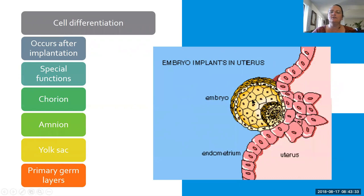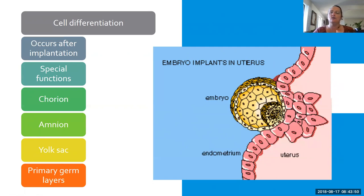Cell differentiation is when the cells start to go where they're programmed to go, very quickly after they start to divide. In the fetus they will all have special functions. Some of them are going to become the chorion and amnion, which make up the amniotic sac, and then there are going to be the primary germ layers. This egg — sorry, it's not an egg anymore, it's an embryo — is getting ready to burrow down into the cells of the uterus.